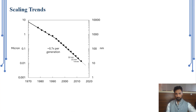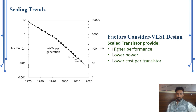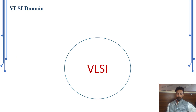Why do we need scaling? Scaling ultimately improves performance, lowers power dissipation, and reduces cost. In 1970 the technology was around 10 microns, and by around 2020 it was around 10 nanometers — a very drastic scaling. The scaling factor between generations is approximately 0.7, meaning each generation shrinks to about 70% of the previous one.